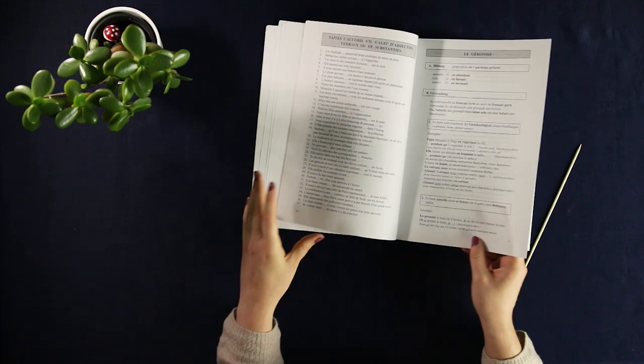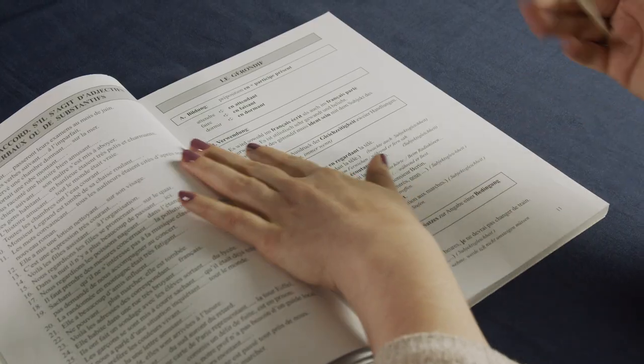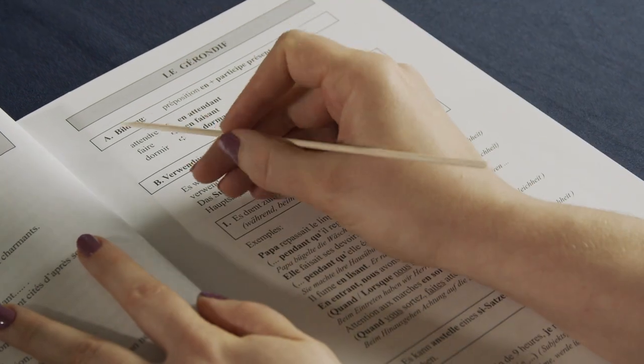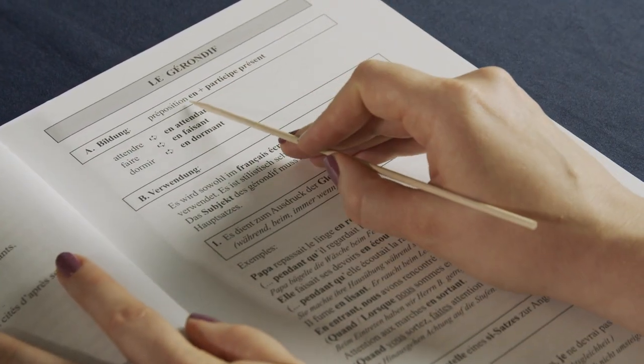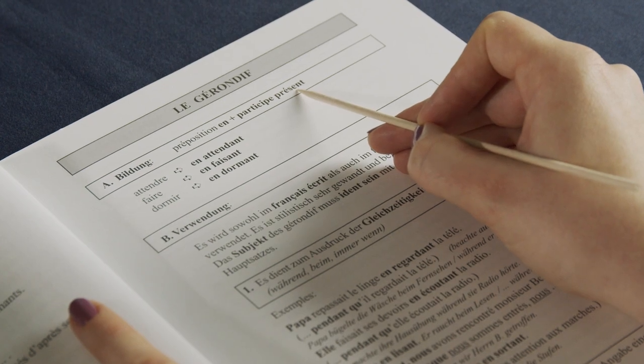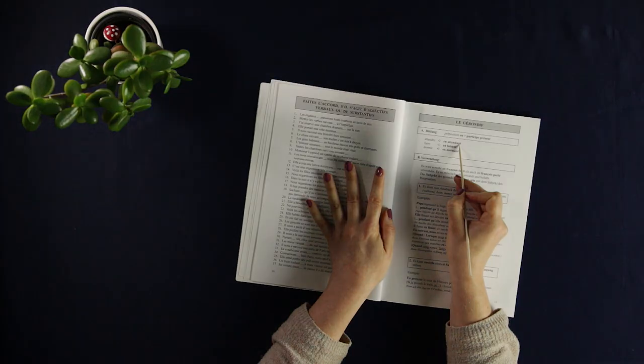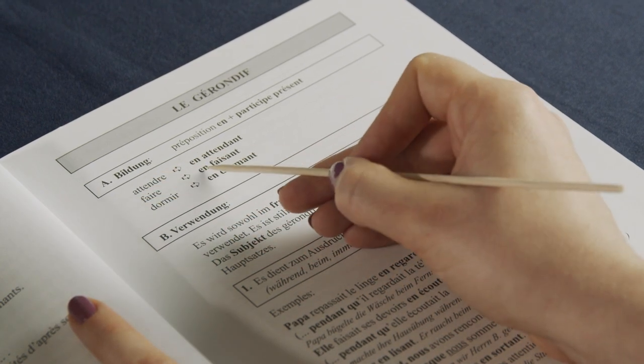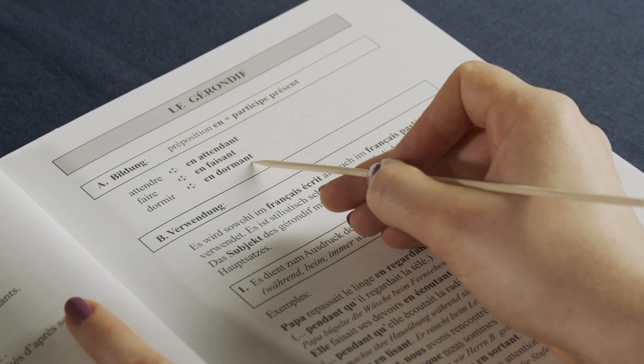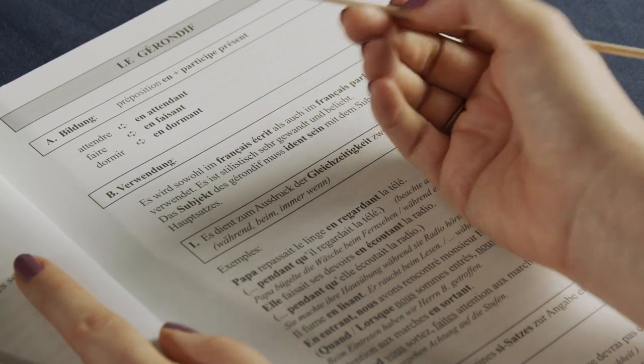Alright, and since we already have the book here, let's go through this chapter, Le Gérondif. So first of all, it tells you how to form it. For example, attendre would become en attendant, faire would become en faisant, or dormir en dormant.